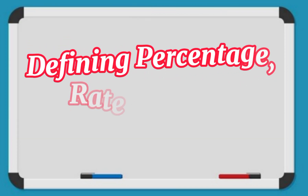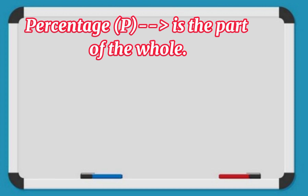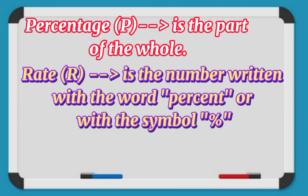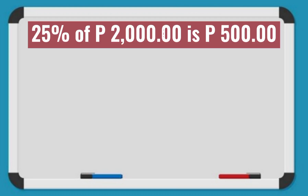Let's go to our next lesson: defining percentage, rate, and base. Percentage is the part of the whole, and its symbol is P. Rate is the number written with the word percent or with the percent symbol. The base is the total or the whole, and it is the number that usually follows the phrase 'percent of.' For example: 25% of P2,000 is P500. Which of these is the percentage, rate, and base?